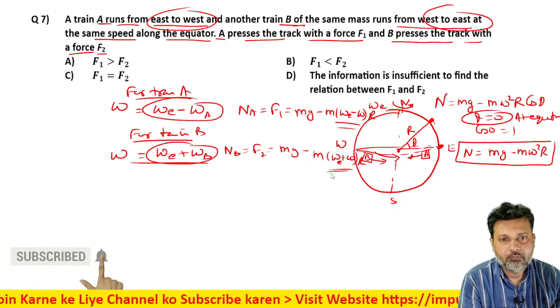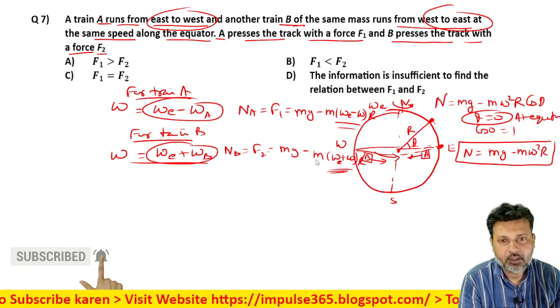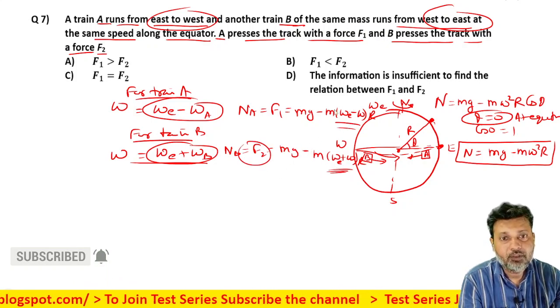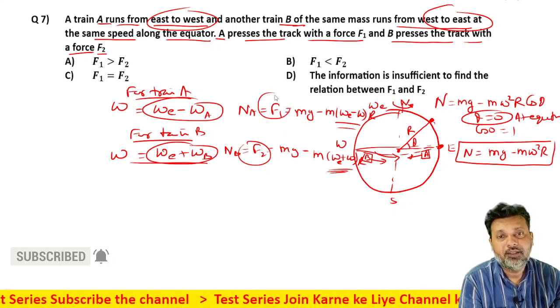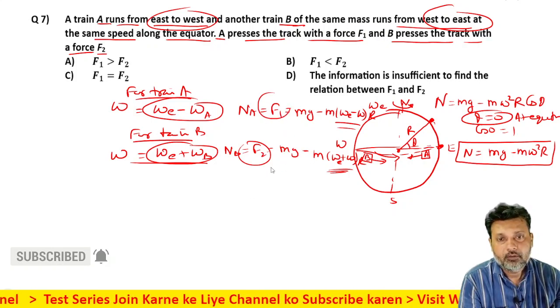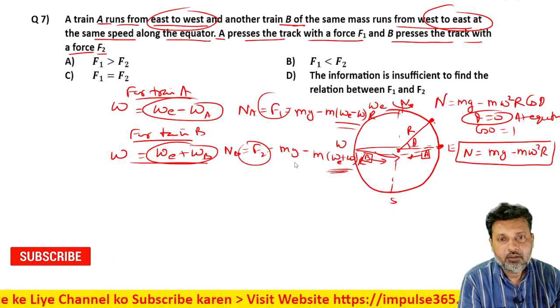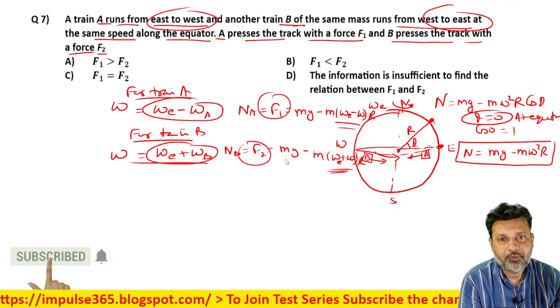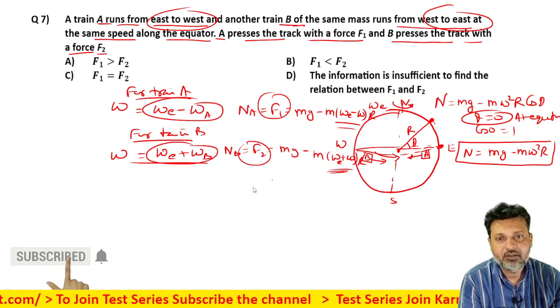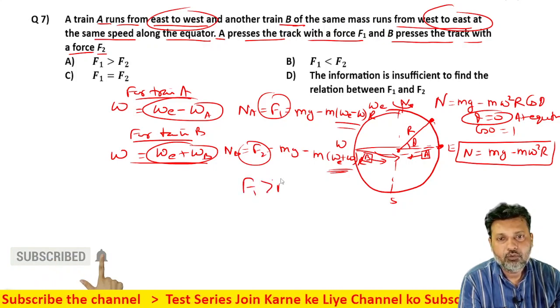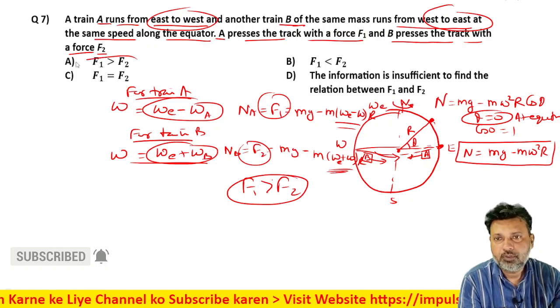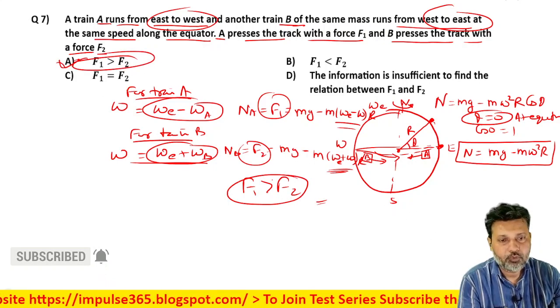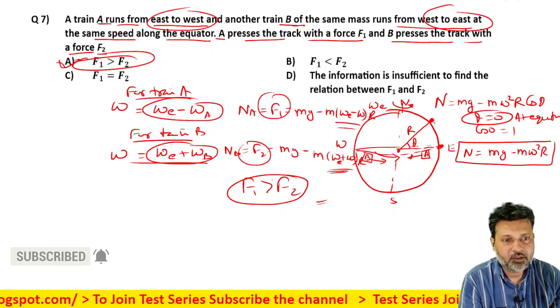Which value is larger? This one where a smaller value is being subtracted becomes the larger term, while this one where a larger value is subtracted becomes the smaller term. Both have the same mg, but here a smaller value subtracts, there a larger value subtracts. Obviously, F1 will be greater and F2 will be smaller. So which option is this? Option A is most appropriate. Remember this point, very important. It's a small point but useful. Next question.